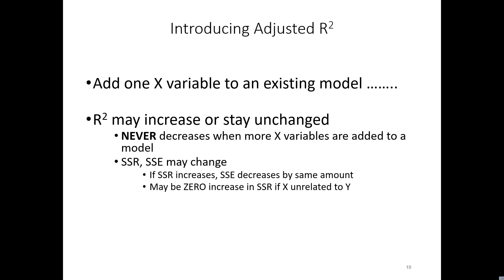We want to dissuade this kind of bad statistical behavior, and one of the ways we do that is by adjusting R-squared to penalize for including extraneous parameters. If the parameter belongs, adjusted R-squared will also go up. But if it's an extraneous parameter — not a very good variable — adjusted R-squared can go down as a penalty.